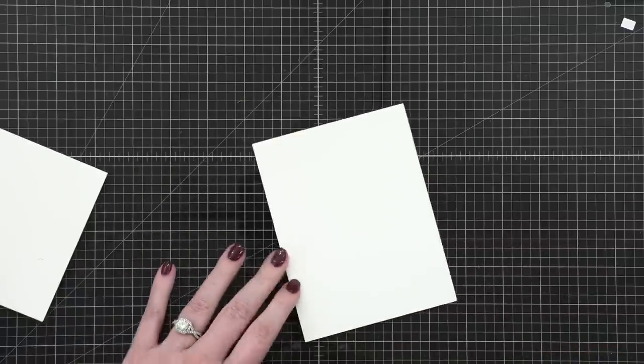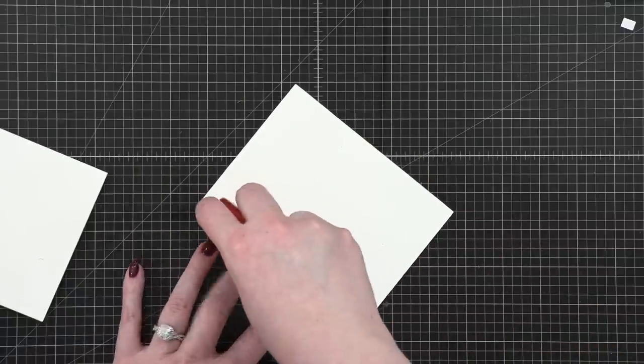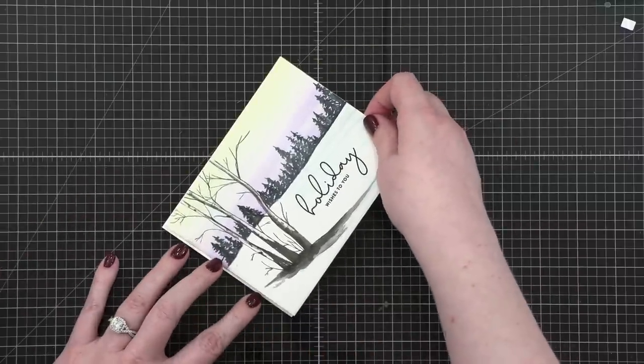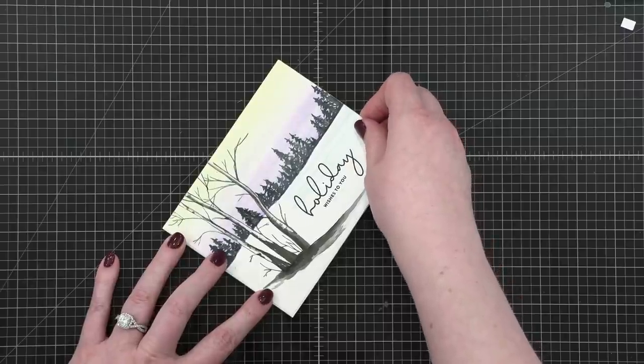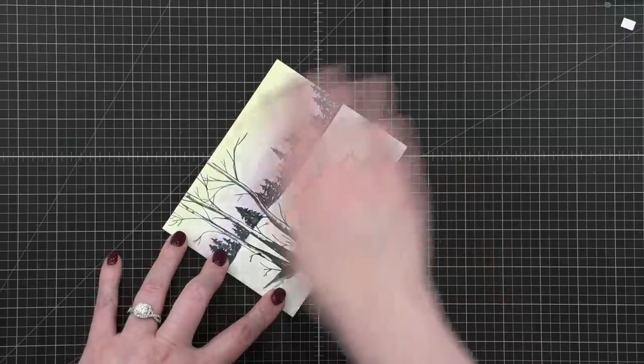So to adhere my watercolor panel down to my card, I used a little bit of Tombow Extreme Adhesive and then placed that down onto my card base. My card base is made out of some Neenah Classic Crest Solar White 110 pound cardstock.